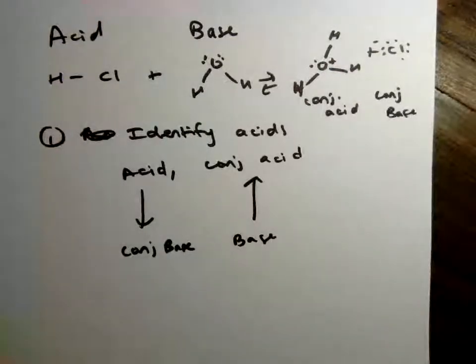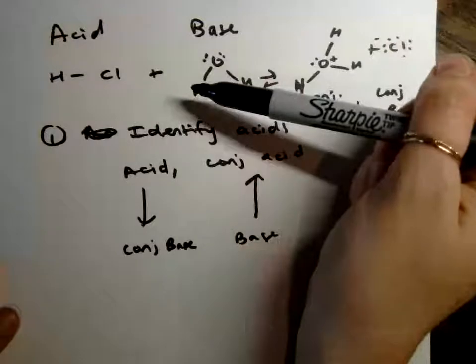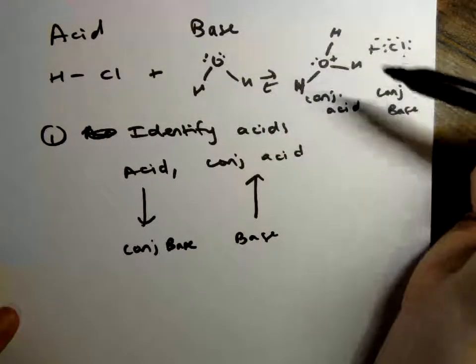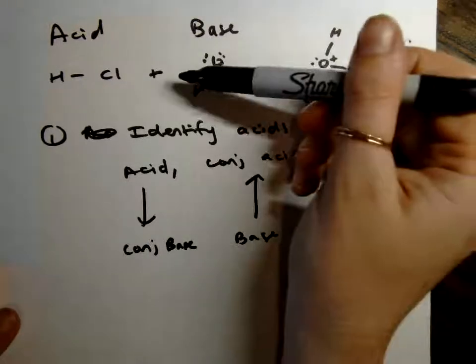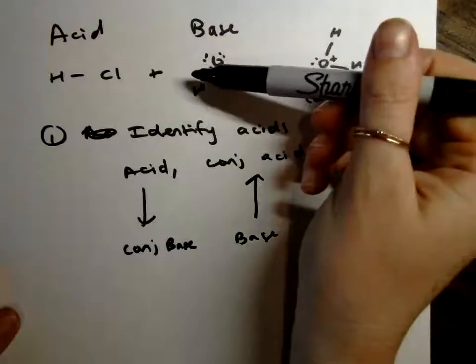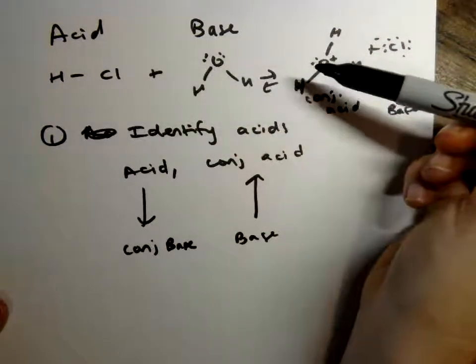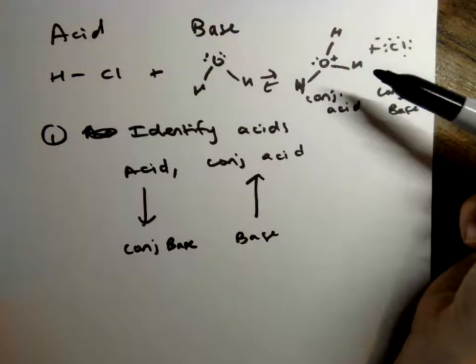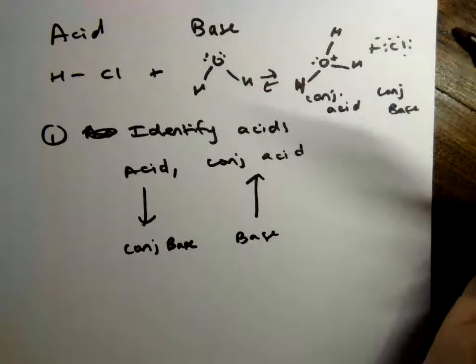And a way that may be easier to look at that is if you think about if the reaction went this way. If it proceeded in the opposite direction, then this H3O plus is actually losing a proton. So it's donating a proton when it goes from H3O plus to water. So if you have this reaction written backwards, what would be the acid? That's the conjugate acid. However it is easier for you to think about it, it's great.